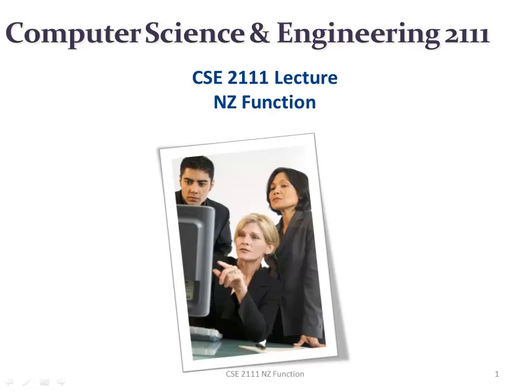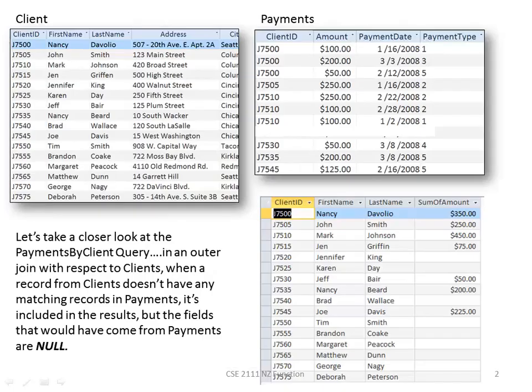The NZ function. Remember in our outer join lecture, when we did an outer join between the client and payments table relative to the client table, it would display all the clients from the client table and only matching records from the payments table.